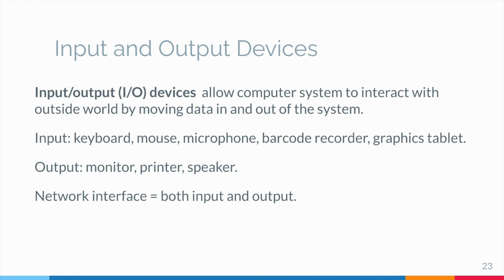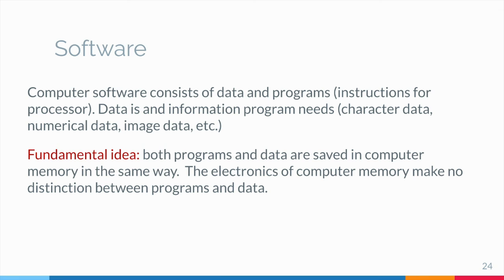Software. Computer software consists of both programs and data. Programs consist of instructions for the processor. Data can be any information that a program needs — character data, numerical data, image data, audio data, and countless other types. The distinction between program and data is not as clear cut as you might think, however.